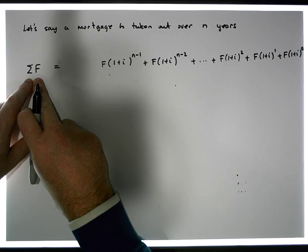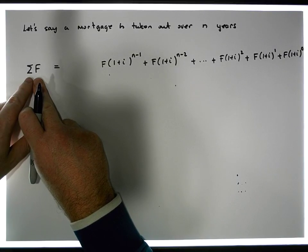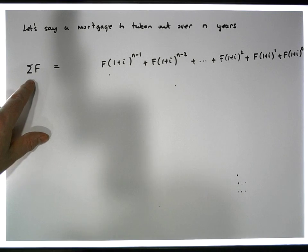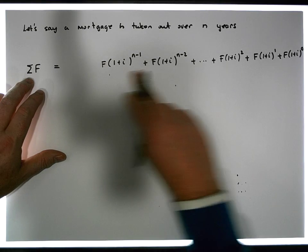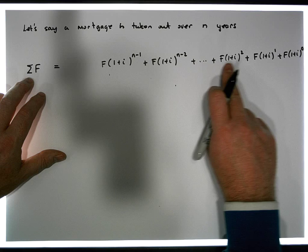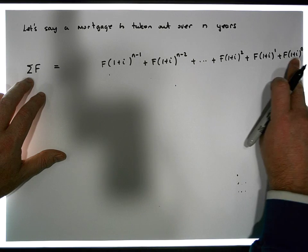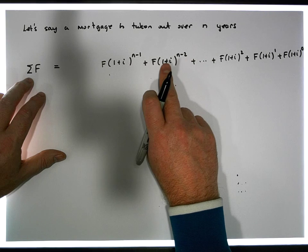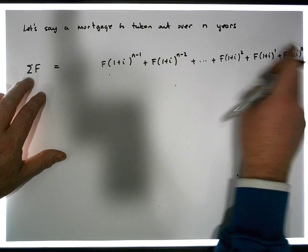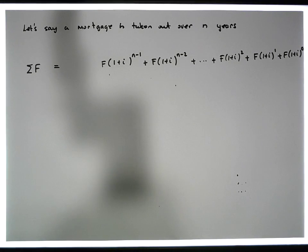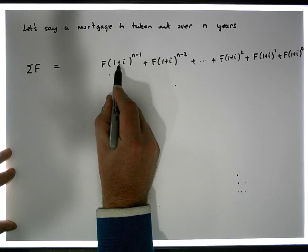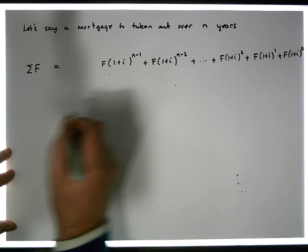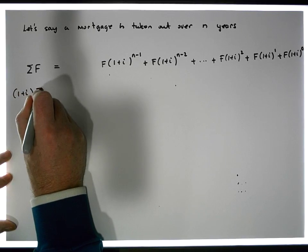This is the total accrual with interest of all repayments over N years. We want to sum up this finite series. There are actually N terms — the exponent runs from N minus 1 down to 0. To do this we'll use a little sleight of hand: we take the sum of the repayments, sigma F, and multiply it by (1 + i).